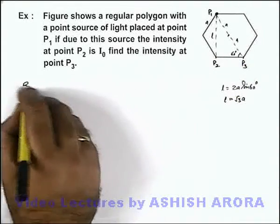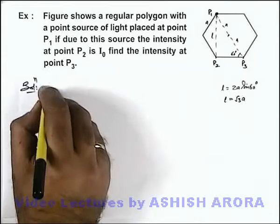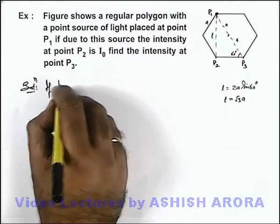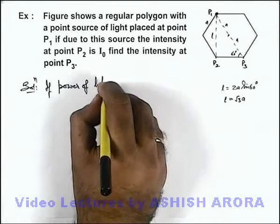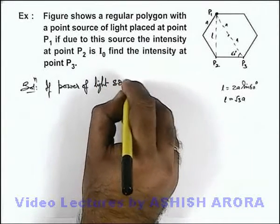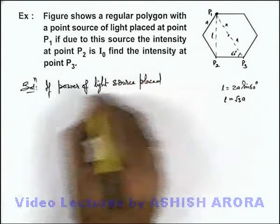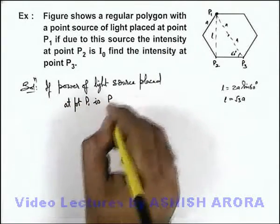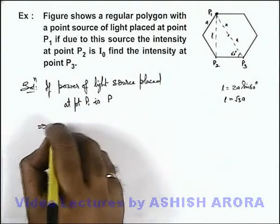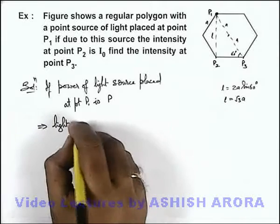Now in this situation, here in solution we can write: if power of light source placed at point P1 is P, this implies we can write light intensity at point P2 is this intensity.